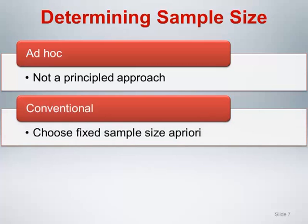The second approach is what we are referring to as the conventional approach. Here we calculate a fixed sample size prior to the initiation of the study, collect data from that many subjects, and then analyze the data as described in the protocol. This is by far the most commonly used approach in clinical research today.